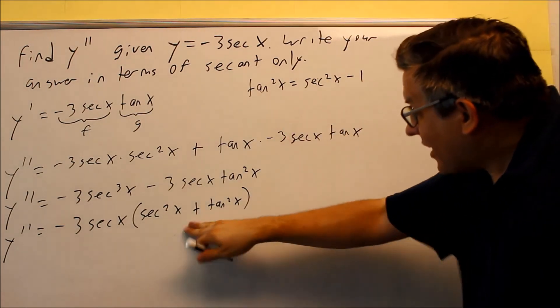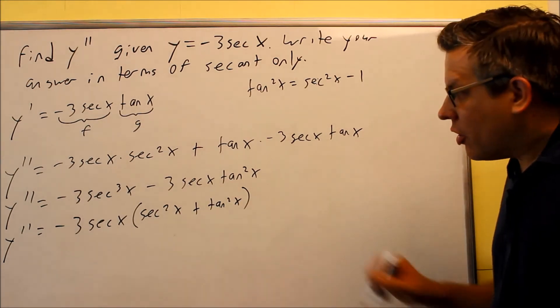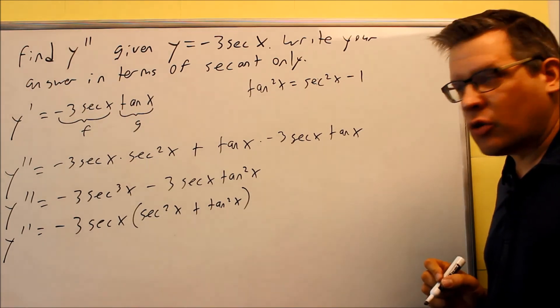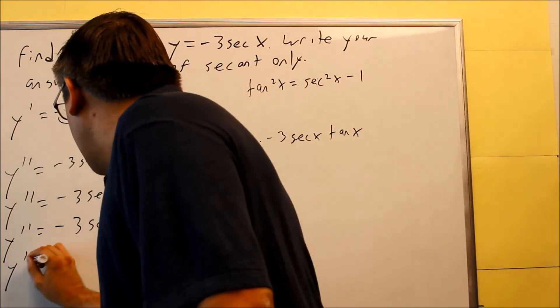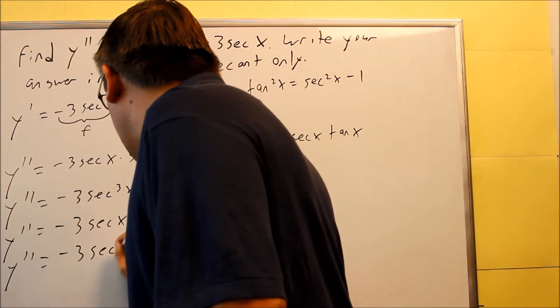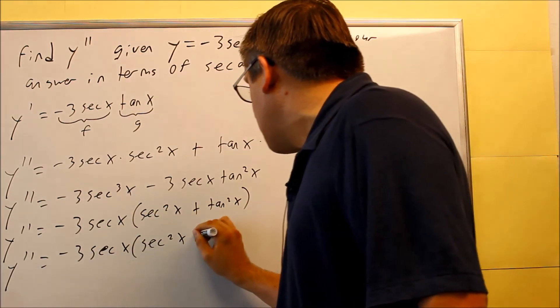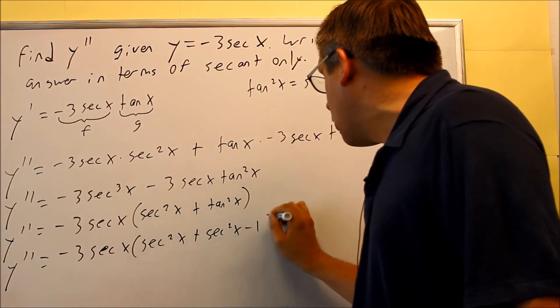And so we need to apply that identity for this one here so that way we can get rid of the tangent squared, write it all in terms of secant because that's what the instructions told us to do. So we apply that and you get negative 3 secant x inside secant squared x plus secant squared x minus 1.